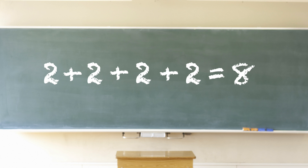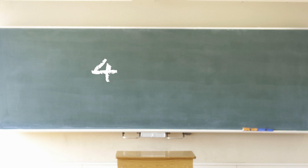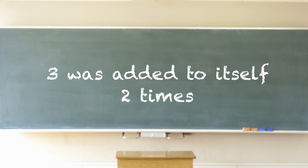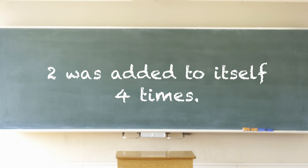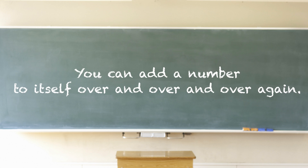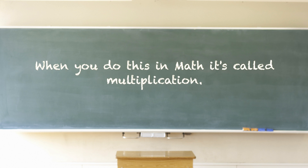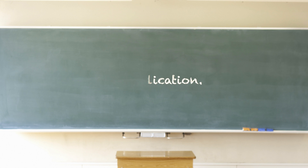Here is another example: two plus two plus two plus two equals eight, or you could say four times two, which also equals eight. In the first example, three was added to itself two times. In the second example, two was added to itself four times. You can add a number to itself over and over again — when you do this in math, it is called multiplication.